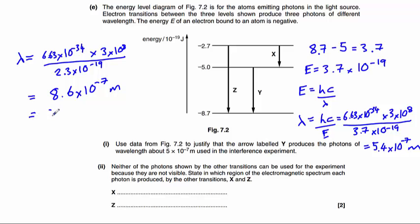which gives us a wavelength of 8.6 times 10 to the minus 7 metres. That's around 860 nanometres, which is longer than the visible light. So that will be infrared.